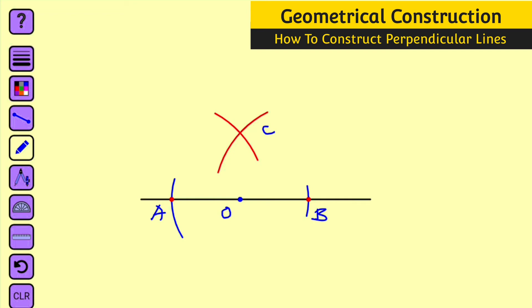What do we do next? Use your ruler to connect the point of intersection C and the origin O. So this angle right here is 90 degrees. Therefore we conclude by saying that line CO is perpendicular to line AB.